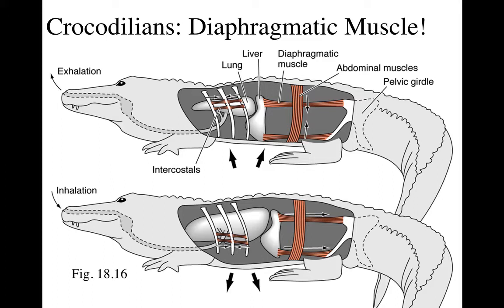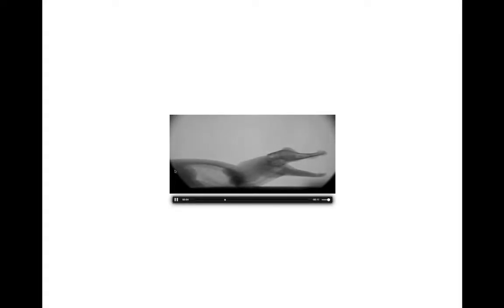When they want the liver to return, they contract their abdominal muscles, which serves to lengthen those diaphragmatic muscles again. Here is a video — look at this liver moving! Isn't that freaky? It's also doing some buccal pumping, which is pretty primitive.